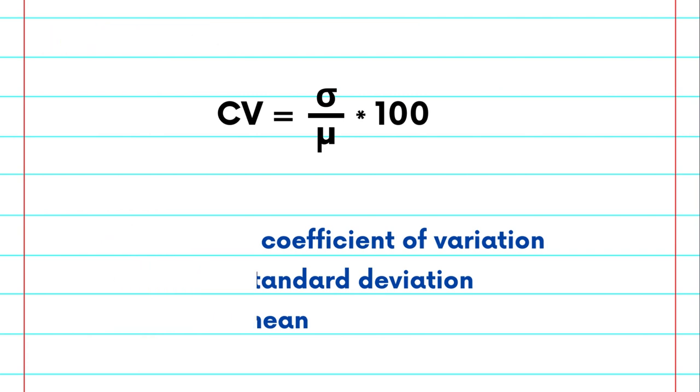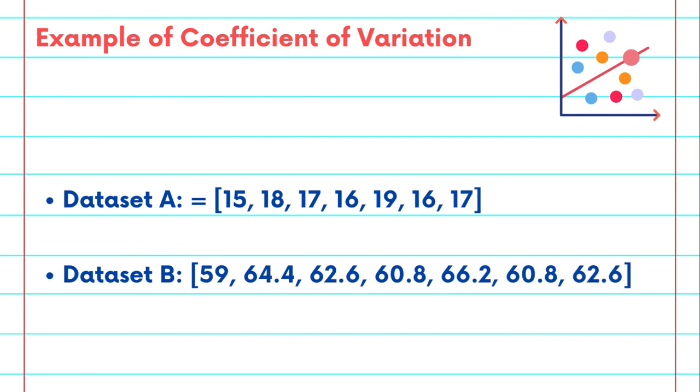Let's look at an example. Here we have two datasets. Dataset A, which includes the daily temperatures in Celsius for a week, and Dataset B, which includes the daily temperatures in Fahrenheit for the same week.